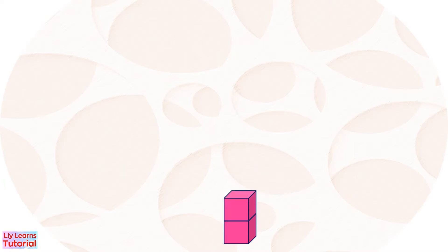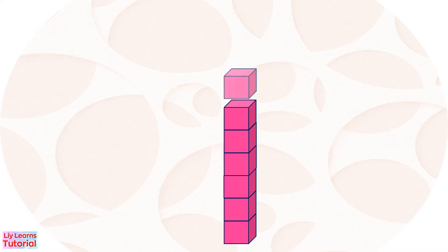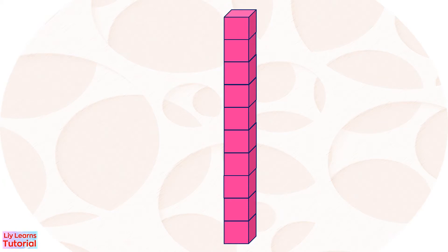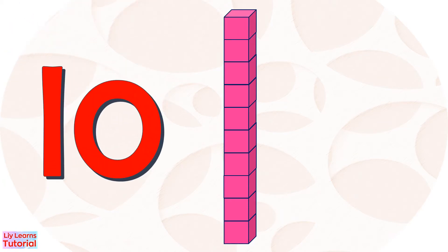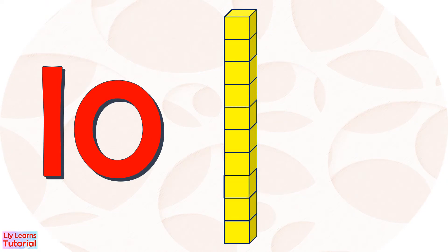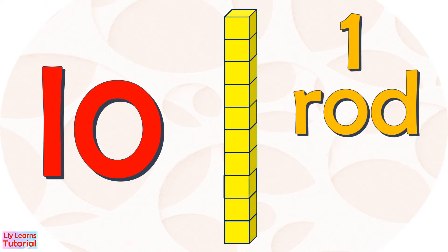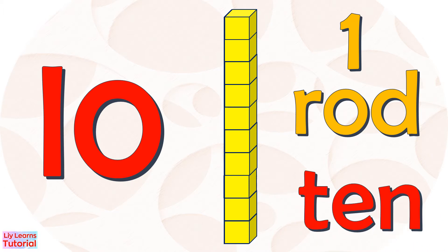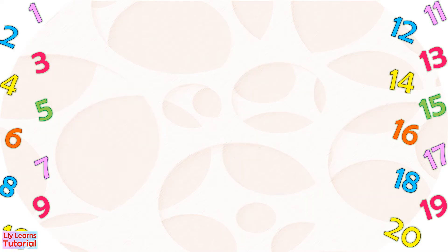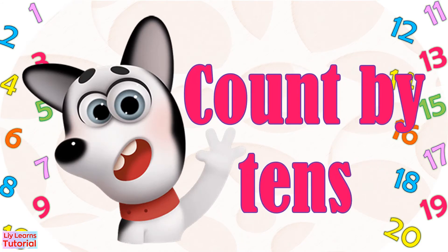1, 2, 3, 4, 5, 6, 7, 8, 9, 10! There are 10 blocks. We can also say this is one rod. When we count by 10s, we say 10 for one rod, because each rod is equal to 10 units or 10 blocks. Now we count by 10s.